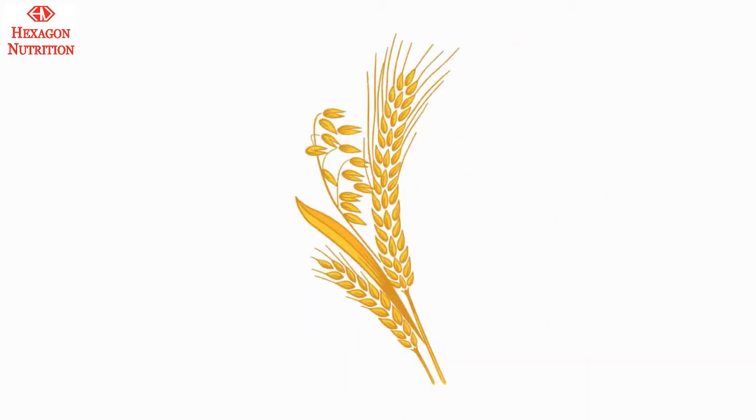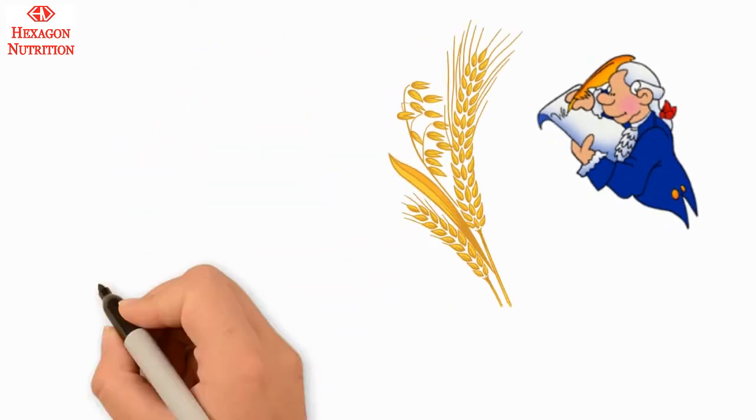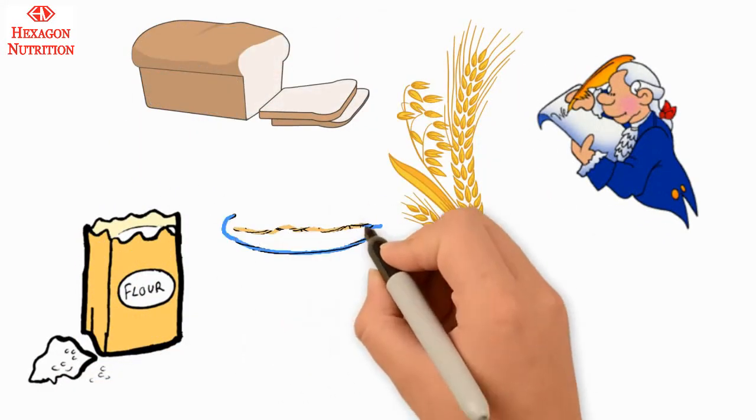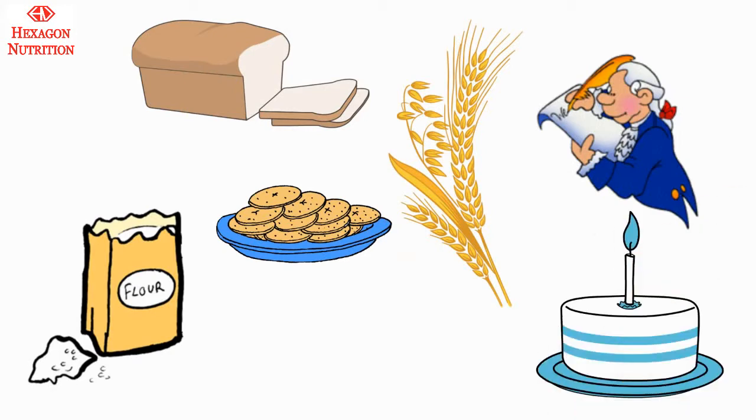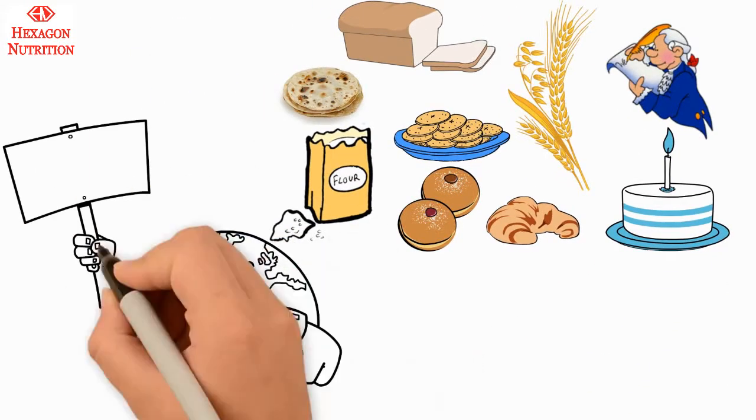Flour derived from grains has been an indispensable part of the human diet for centuries. Flour is consumed in the form of several foods such as bread, cookies, cakes, roadies, biscuits, croissants, buns, and donuts. It is one of the most widely consumed food commodities globally.